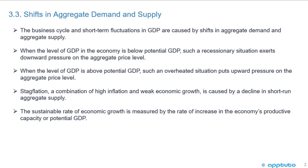Shifts in aggregate demand and supply: the business cycle and short-term fluctuations in GDP are caused by shifts in aggregate demand and aggregate supply. When the level of GDP in the economy is below potential GDP, such a recessionary situation exerts downward pressure on the aggregate price level. When the level of GDP is above potential GDP, such an overheated situation puts upward pressure on the aggregate price level. Stagflation, a combination of high inflation and weak economic growth, is caused by a decline in short-run aggregate supply. The sustainable rate of economic growth is measured by the rate of increase in the economy's productive capacity or potential GDP.